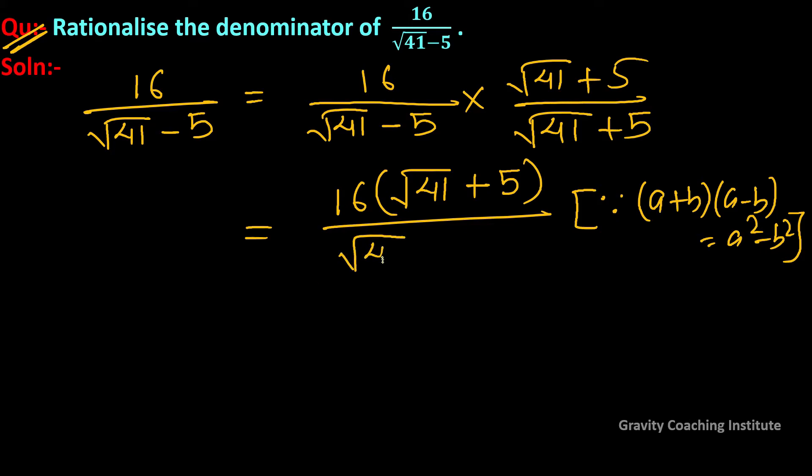So the denominator is root under 41 whole square minus 5 whole square, which equals 16 into bracket of root 41 plus 5 upon...